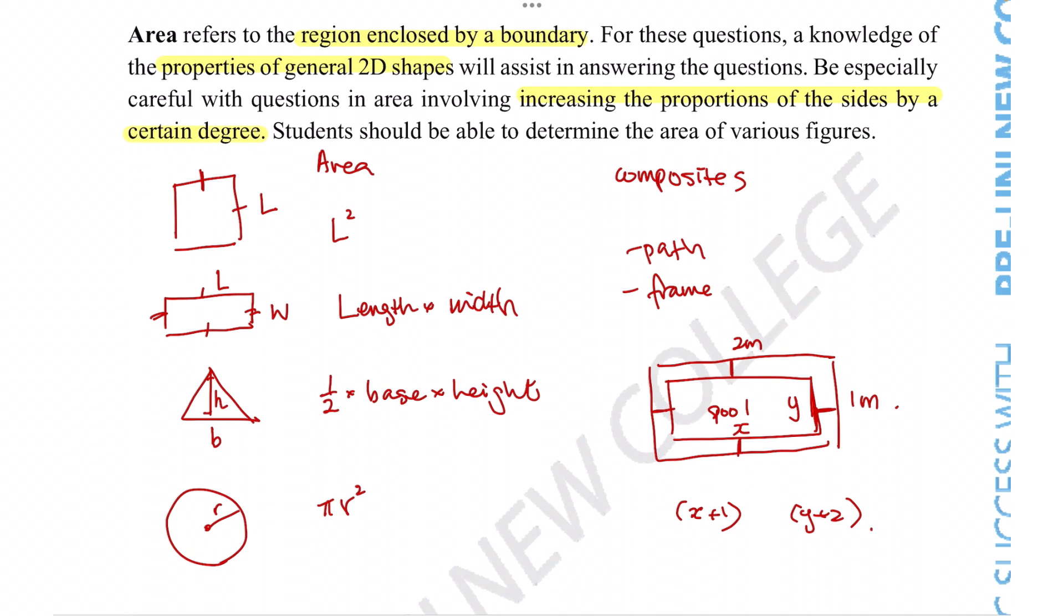But we know that since the path has to go all around the pool, there is actually a second side that we need to consider. So really make sure you draw the diagram and make sure we realize that this is the original length, this is one meter, and this is one meter. So we would actually have to add another number to these dimensions for the actual path dimension to be correct. So those would be some things to watch out for whenever you tackle area related questions.